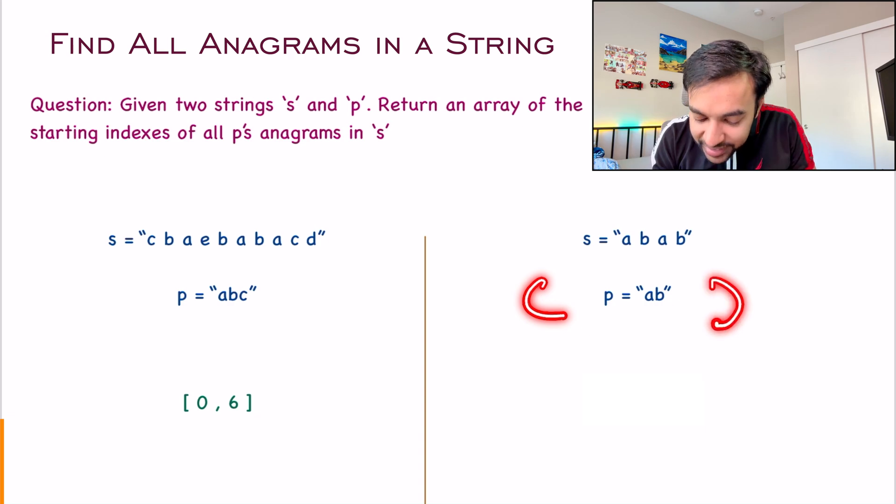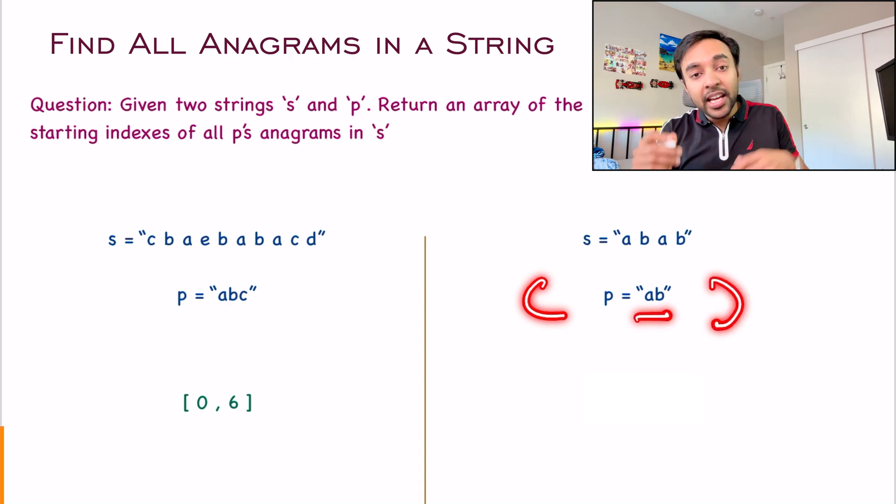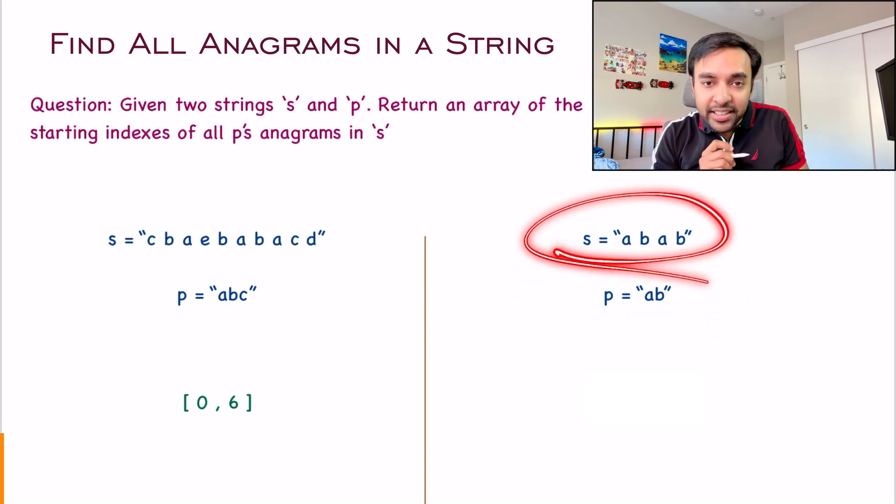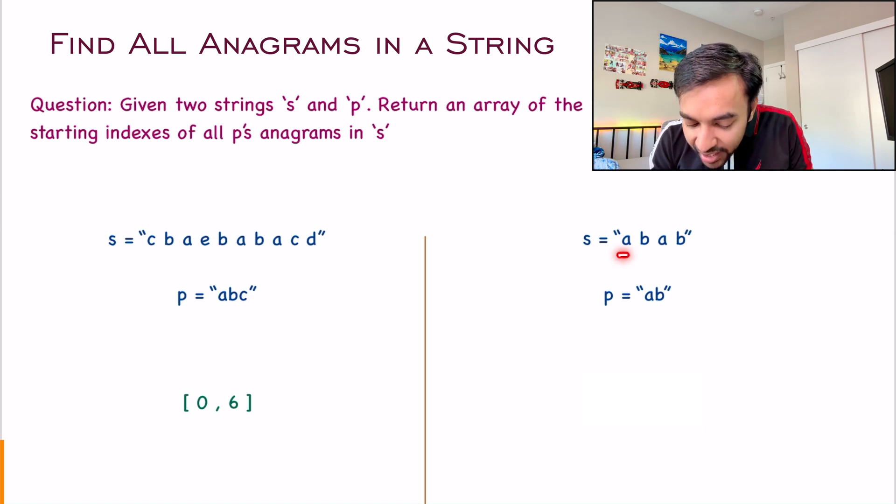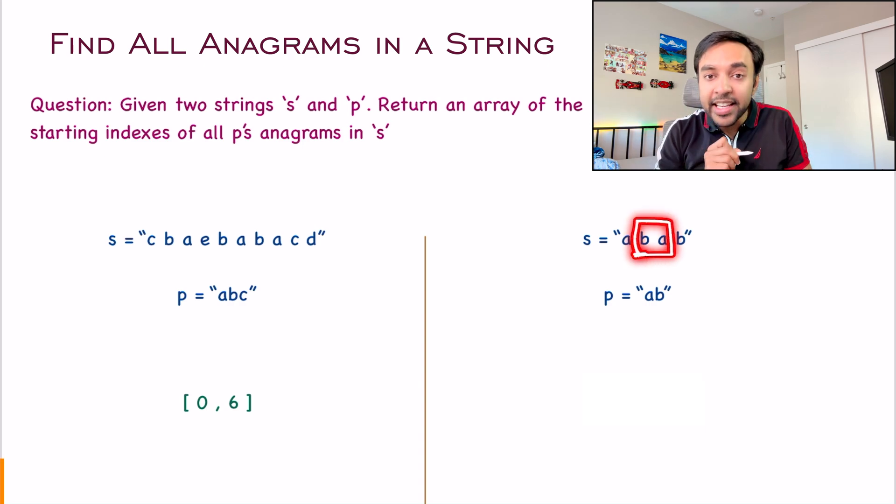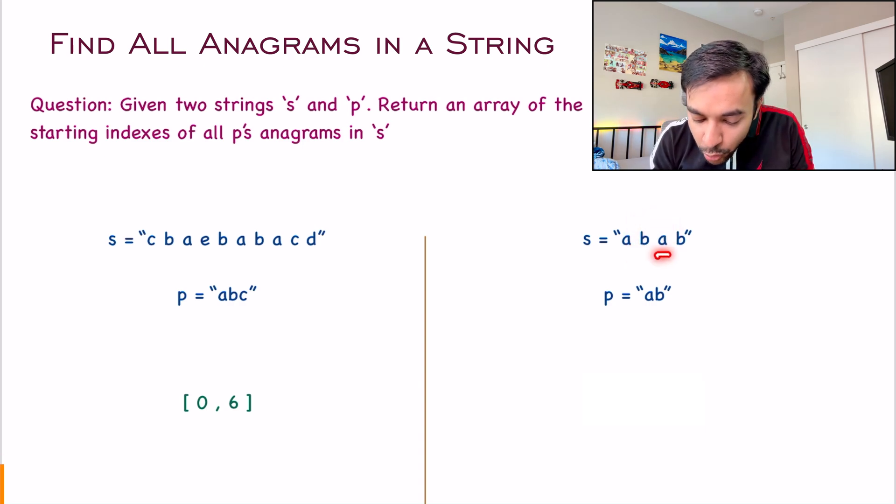In the second test case, my string P is AB. Now, where can you find these strings? If I start at index 0, can I find it? Yes. If I start at index 1, can I find it? Yes. If I start at index 2 again, can I find it? Yes. So at every position, I am able to find an anagram.